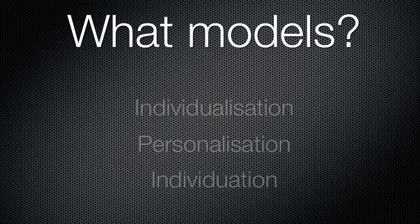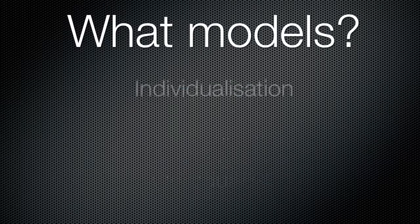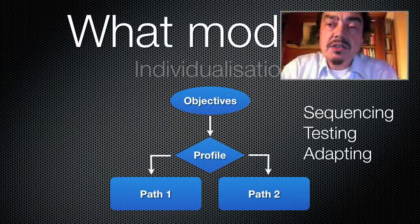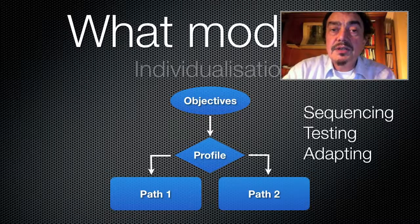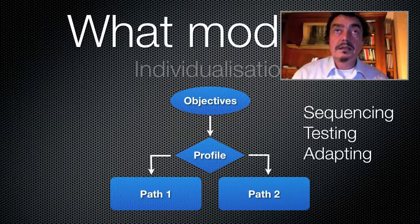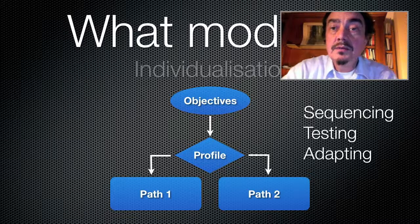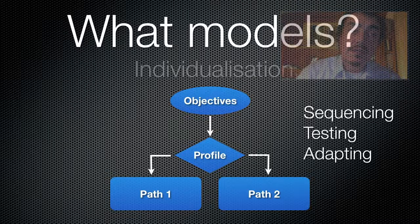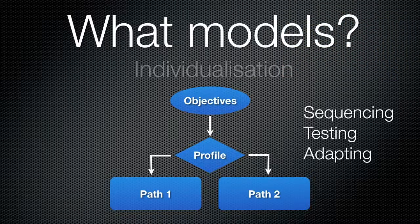What are the models that we can find behind? Typically, individualization starts from predefined objectives. It could be a curriculum, business objectives, learning objectives. Based on your profile, you will adapt the content of the learning in order for you to achieve the objectives. So we start from objectives and define the learning path based on the objectives, and these objectives are usually externally defined.